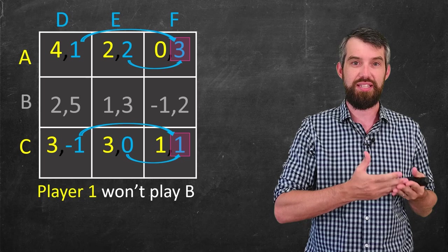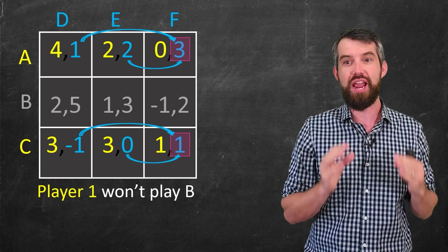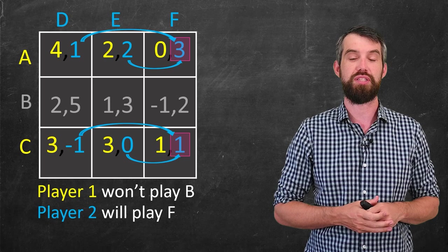And now playing F is a dominating strategy. It's better than playing D or E, in either the case of whether player one plays A and C. Either way, the arrows mean that we should be playing F before player number two. So now we know something else. Player two will play F.